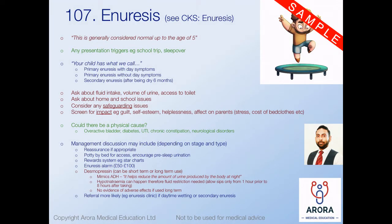Moving on to enuresis - a parent comes in worried about their child's bedwetting. Reassurance is generally what's needed in most situations: this is actually really normal and is generally considered normal up to around age five. Look for presentation triggers - is there a school trip or sleepover coming up that's triggered the parents to seek help? Try to identify the form of enuresis: primary enuresis is where the child has never had a period of dryness, and this can be with or without daytime symptoms.